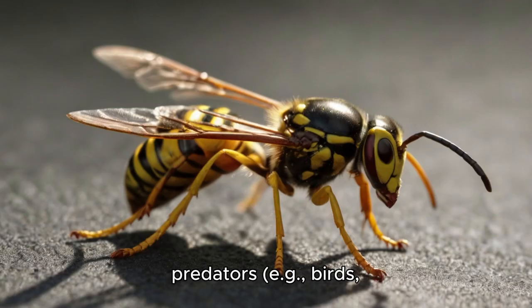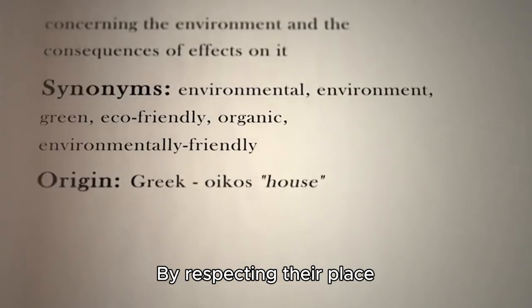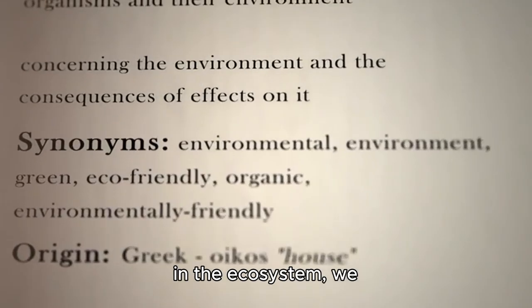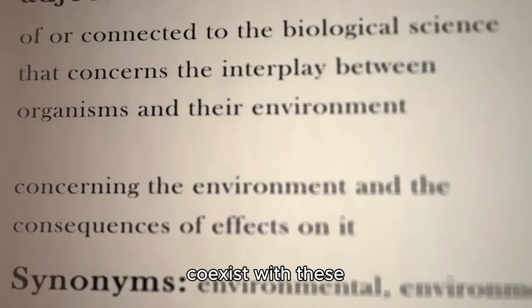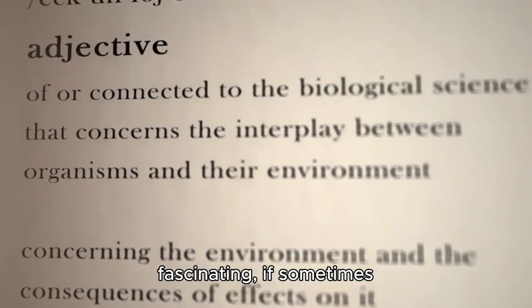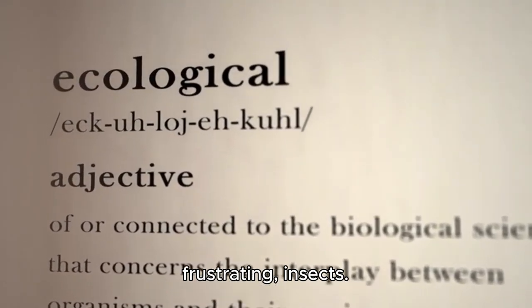Encouraging natural predators — for example birds and dragonflies — can reduce reliance on chemical controls. By respecting their place in the ecosystem, we can coexist with these fascinating, if sometimes frustrating, insects.